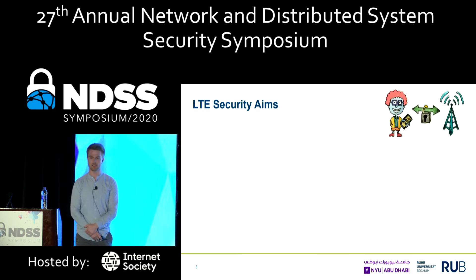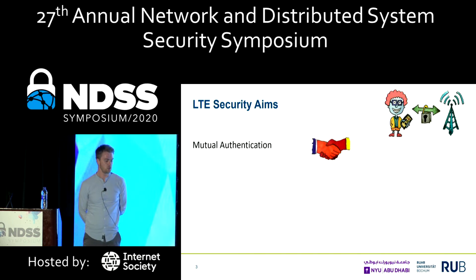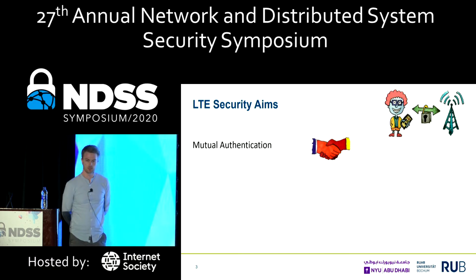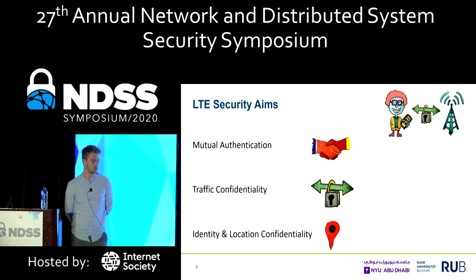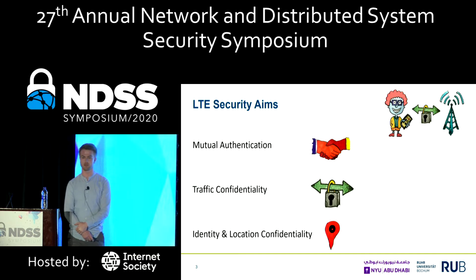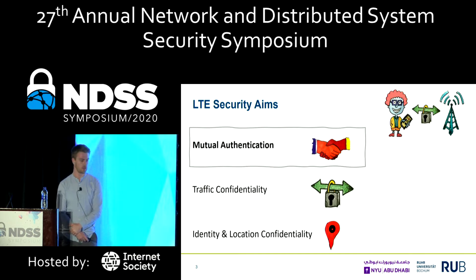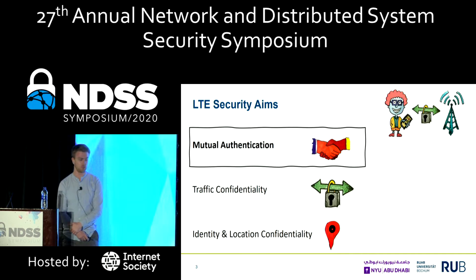So I have to pay about 400 bucks because of a security issue in the LTE specification. Why is this even possible? Because LTE has some cool security aims like mutual authentication, where the identity of the provider is confirmed and the provider knows who you are talking to. We have traffic confidentiality, which protects against passive eavesdropping attacks. And we have, because we are in the mobile environment, security aims like identity and location confidentiality. Today we are going to break this first central security aim of LTE, which is mutual authentication.